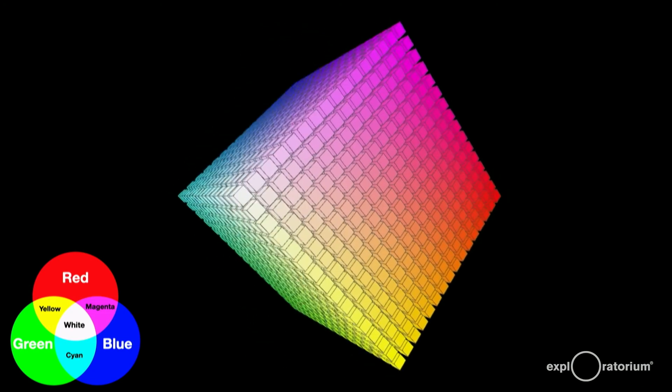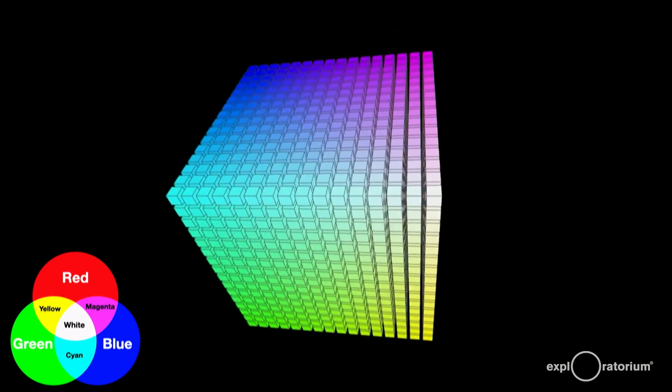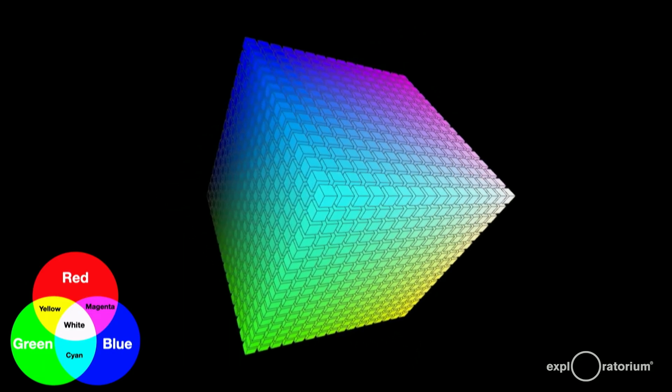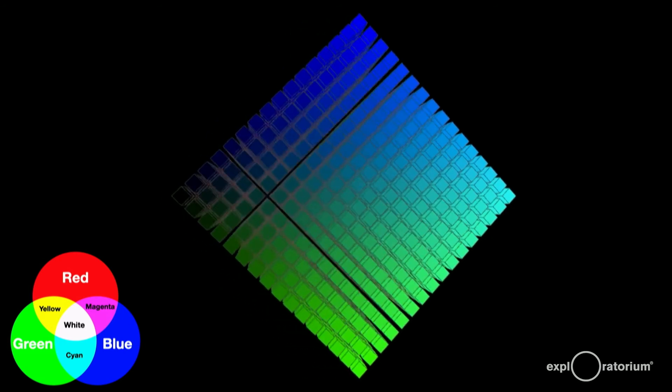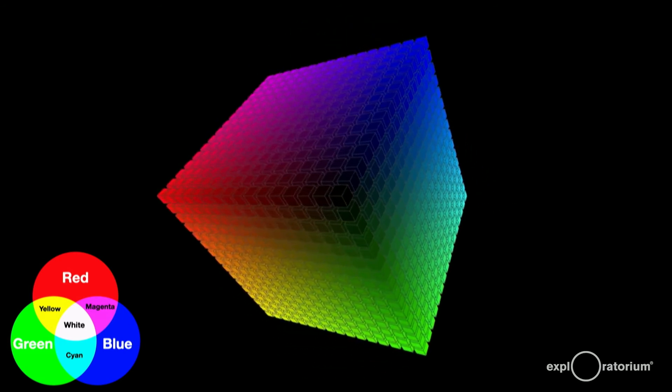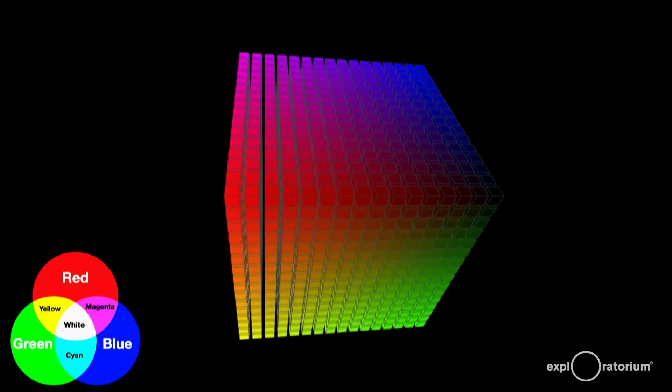If you're a computer geek like me, this cube is 16 by 16 by 16 colors for a total of 4,096 colors. And this would be called 4-bit color, because 2 to the 4th power is 16.